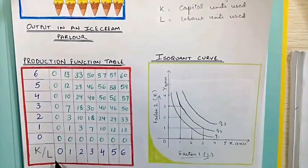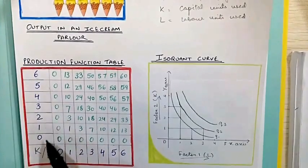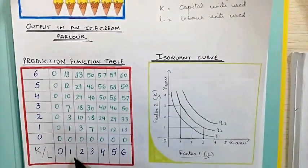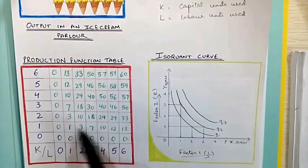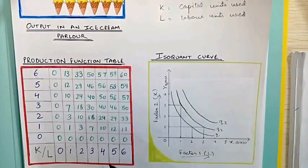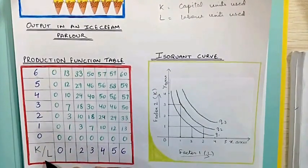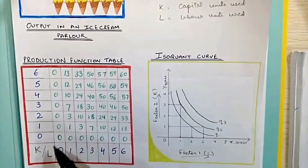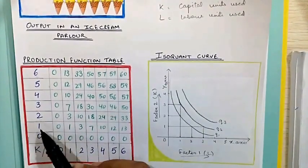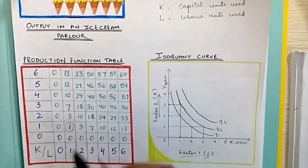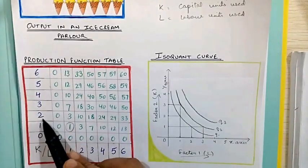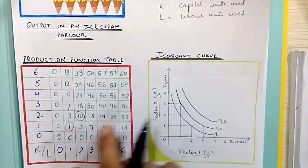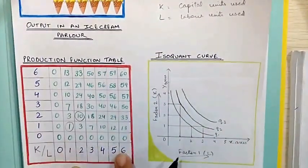Now let us have a look at the production function table for the same example. In this table, on the horizontal side we have labor units and on the vertical side we have capital units. The green part represents the output. This table makes it clear that both inputs are necessary for production — if any one factor is zero, the output is going to be zero. When one unit of capital and one unit of labor were used, output was one. When two units of capital and two units of labor were used, output increased to ten. The production function tells us the maximum quantity of output that can be produced using different combinations of input.